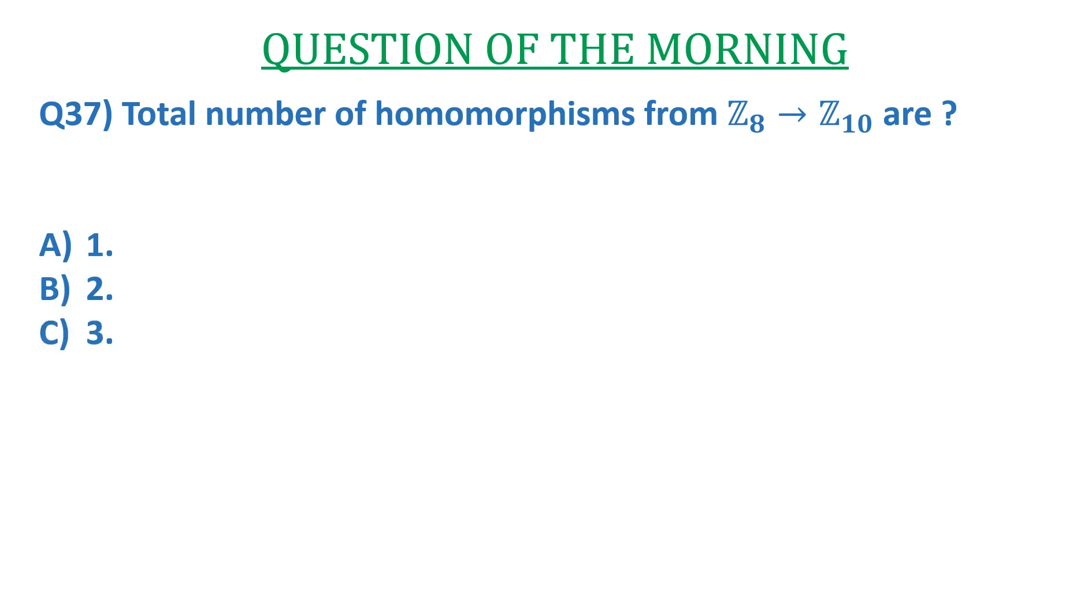In this video, we are going to discuss a question of abstract algebra. The question is: total number of homomorphisms from Z8 to Z10 are? The options are a) 1, b) 2, c) 3, and d) 4.